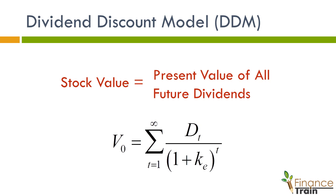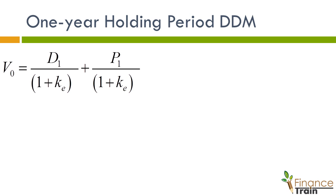A normal assumption is that an investor will hold the asset for a period and then sell it. With such an assumption, it becomes easy to calculate the stock value. The one-year holding period DDM assumes that the investor holds the stock only for one year and then sells it at the end of the year. In this scenario, the current stock value can be calculated using the dividend discount model if we know how much dividend will be paid at the end of the year and at what price the investor will be able to sell the asset.